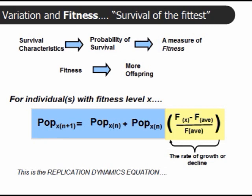And that can be seen in the remaining term in the formula, shown in yellow here, where f of x is the fitness of the individual, and we subtract the average fitness of the population, and then we form a rate of growth by dividing by the average fitness in the population. And this is the replication dynamics equation.